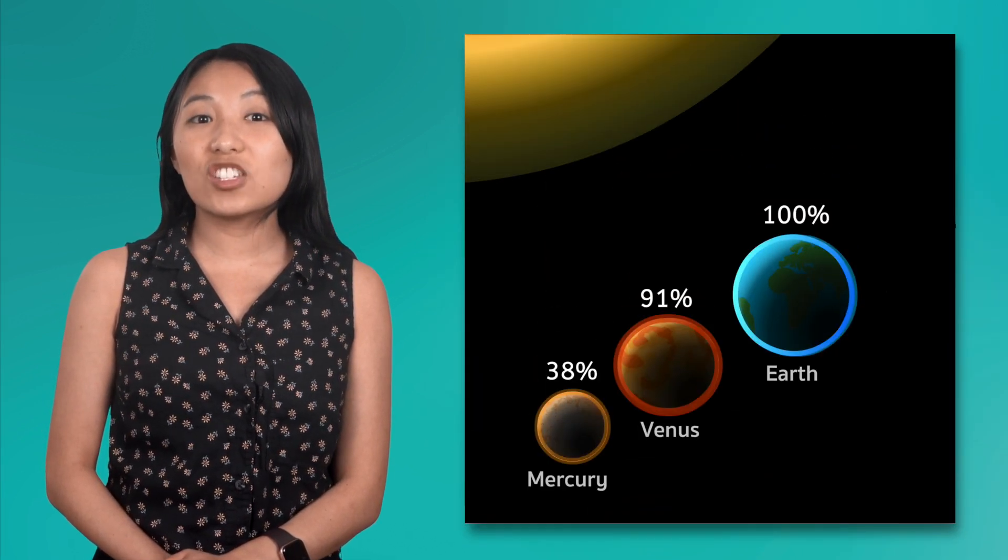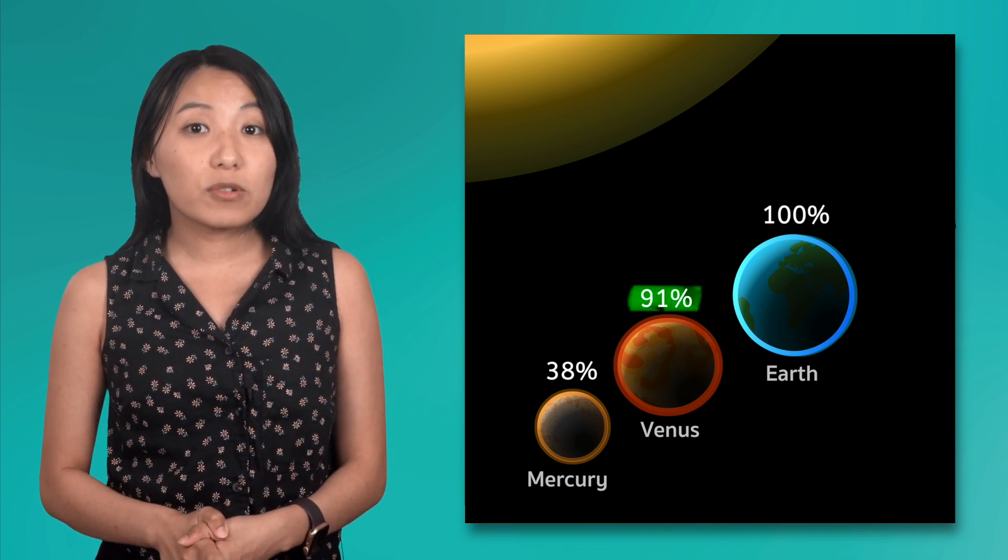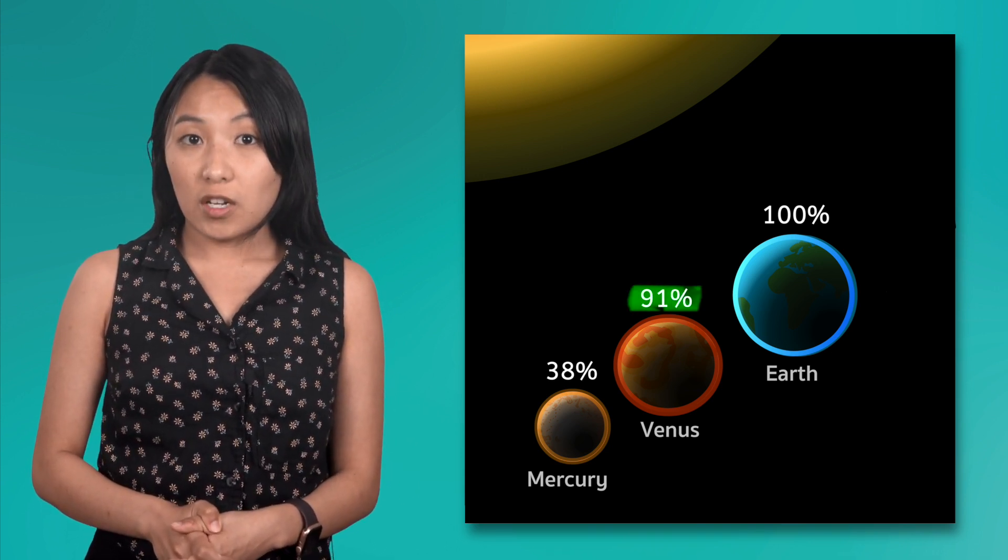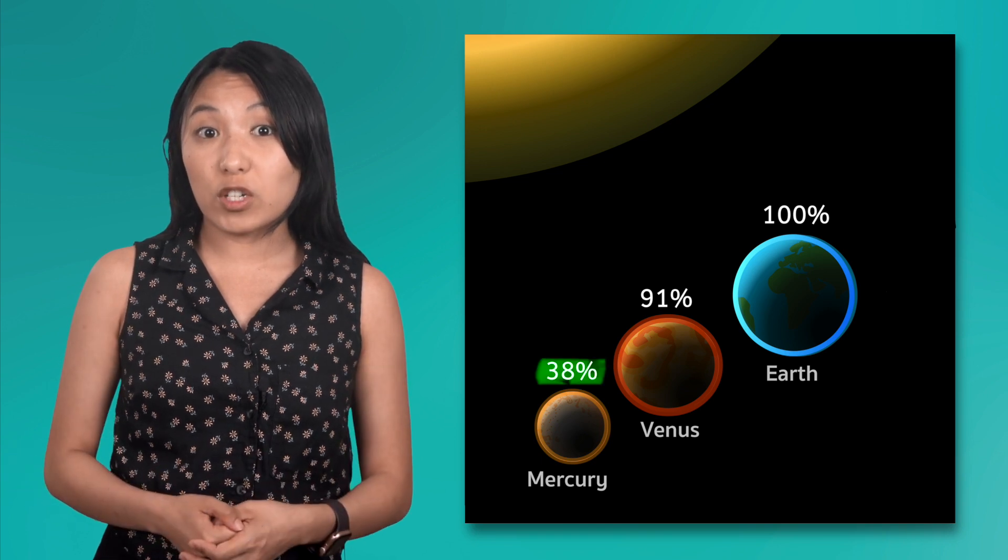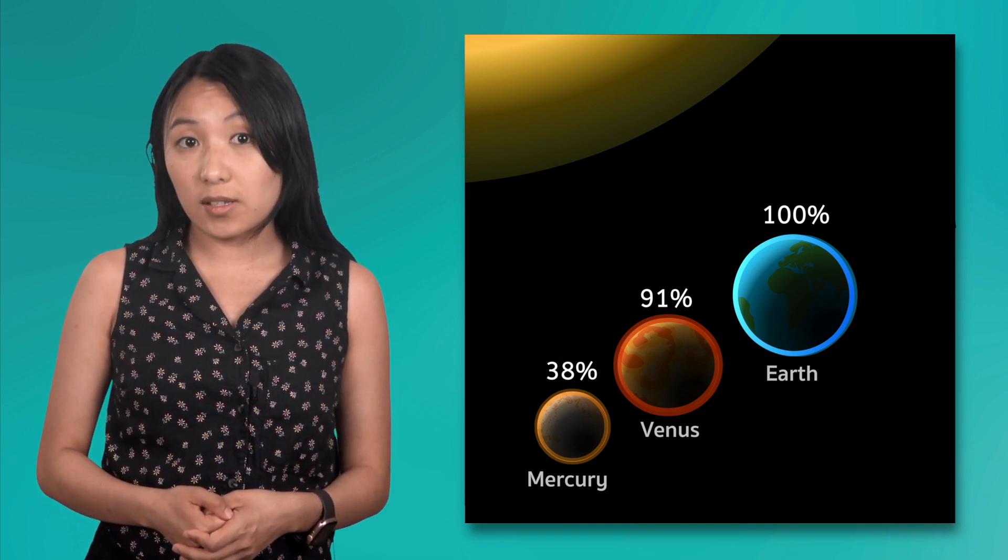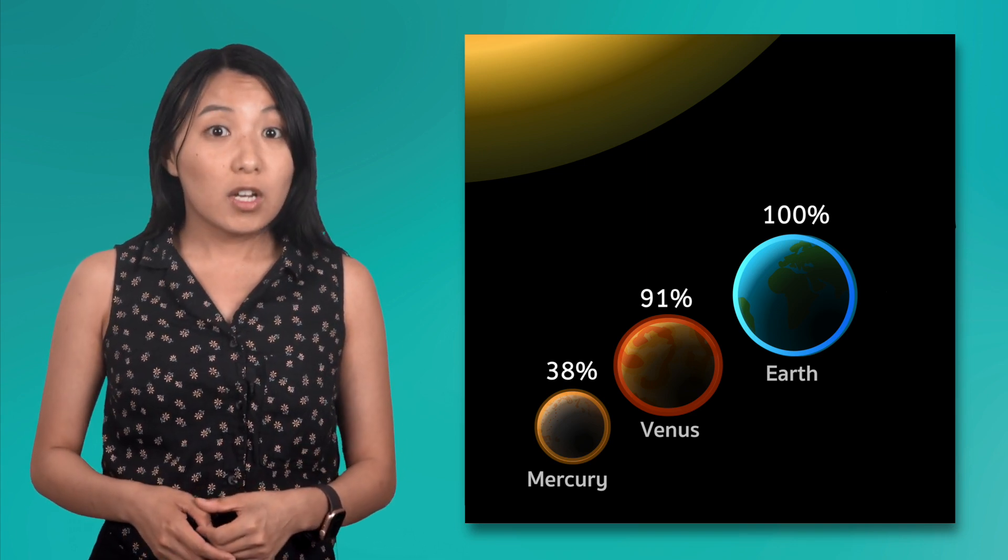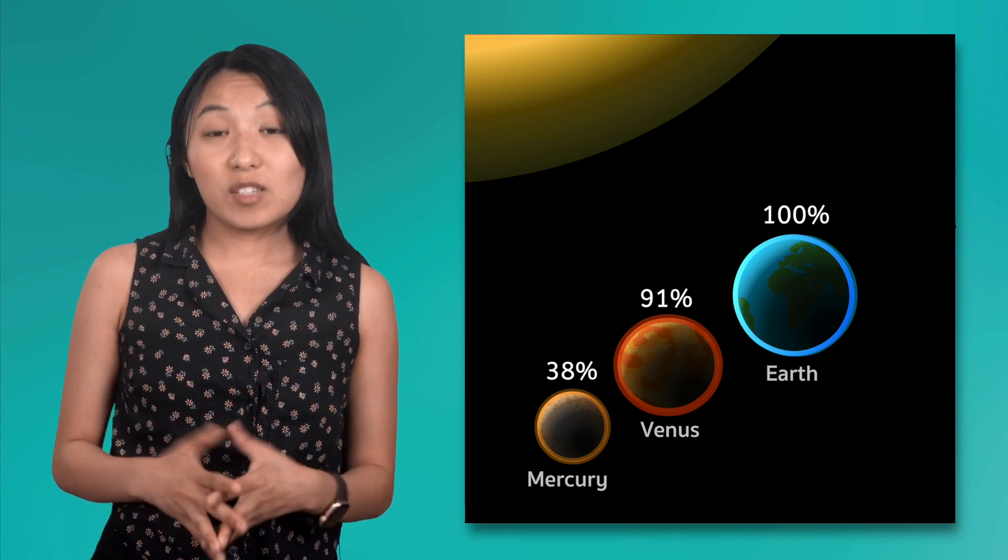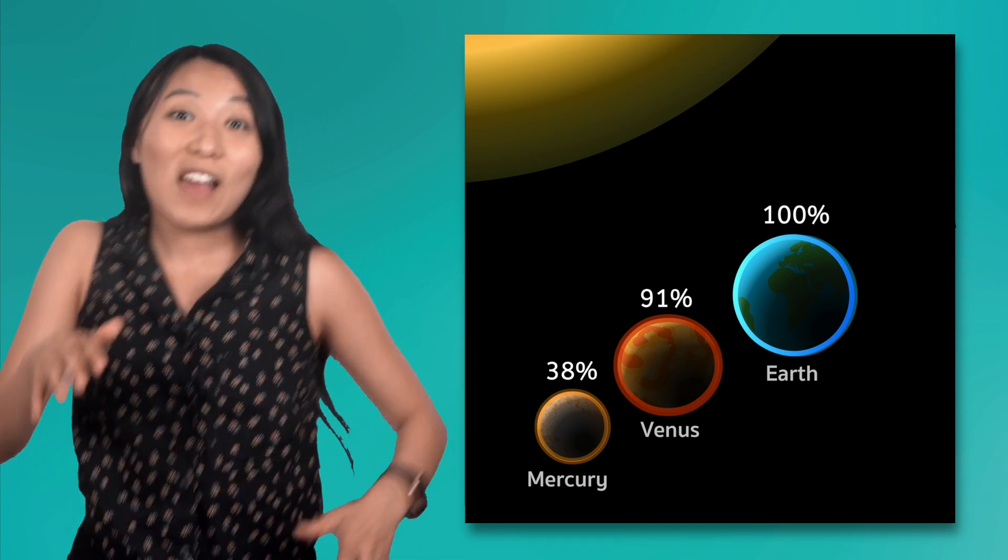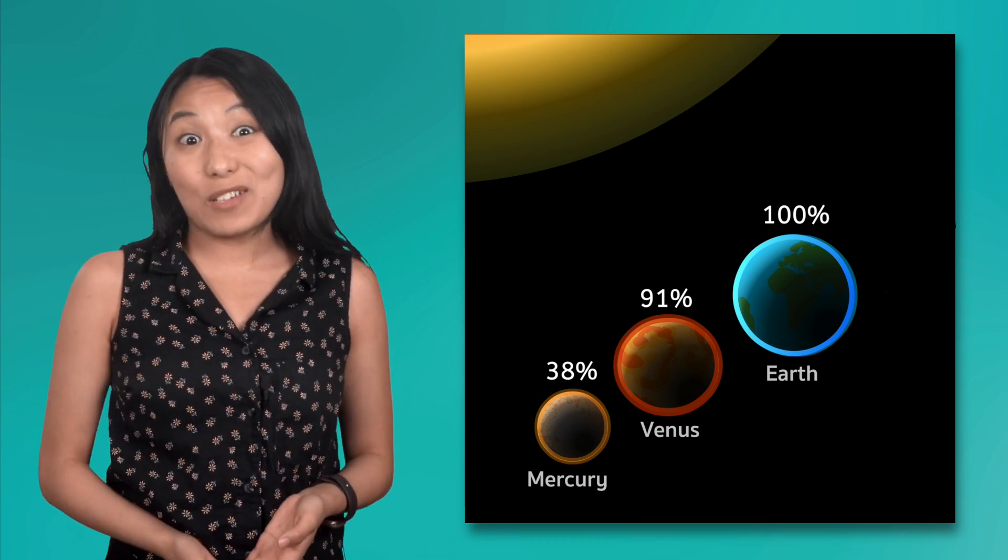Since the mass of Venus is just a bit smaller than Earth's, the gravity on Venus is about 91% of the gravity of Earth. Mercury only has about 38% of the gravity Earth does because of its small size. So, standing on Venus, you'd weigh a bit less than you do here on Earth, but on Mercury, you'd weigh a lot less. This means you'd be able to bounce around on Mercury as you explored, which sounds pretty fun to me.